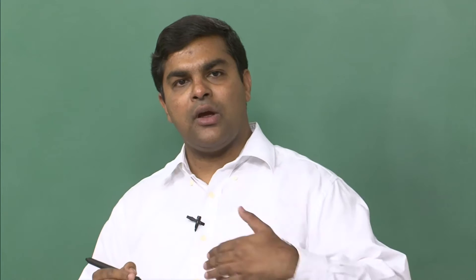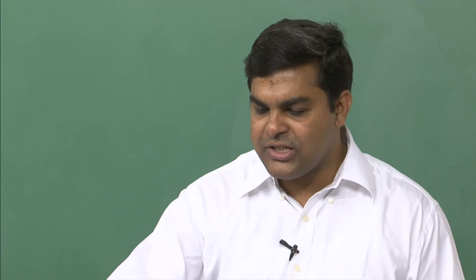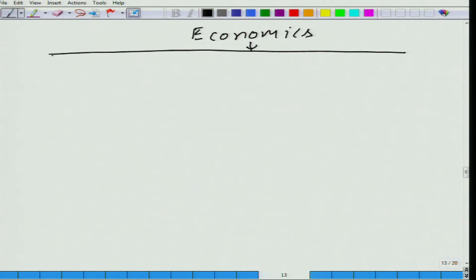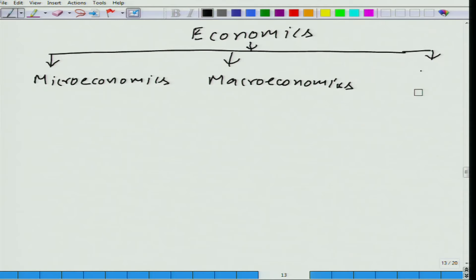Now, rather than going through different fields of economics one by one, let us look at the broad fields. We can say economics has three main branches: the first is microeconomics, which is what we are supposed to study in this course; then we have macroeconomics; and the third is not exactly statistics, but what economists call econometrics.